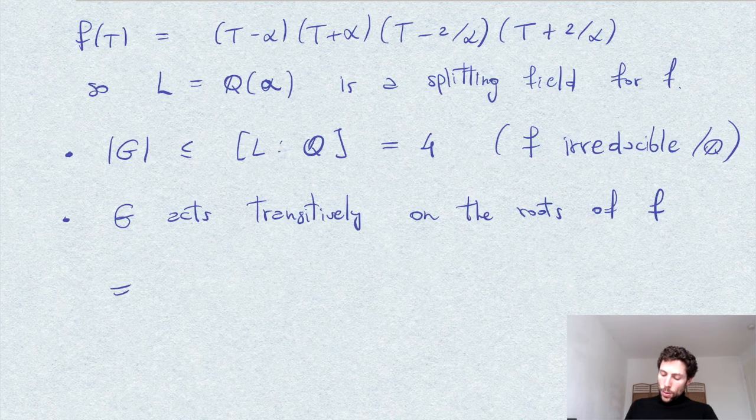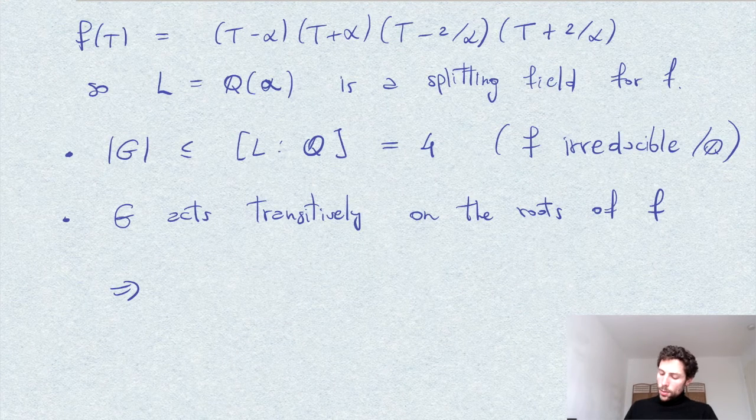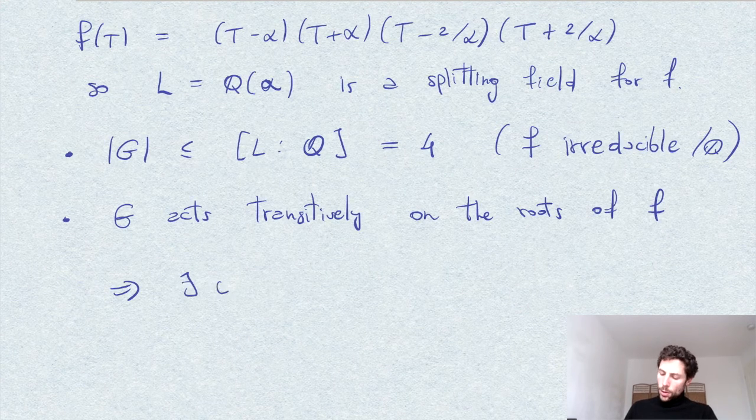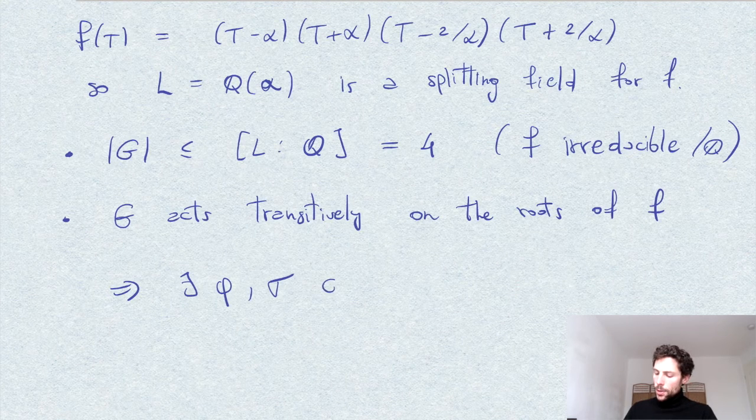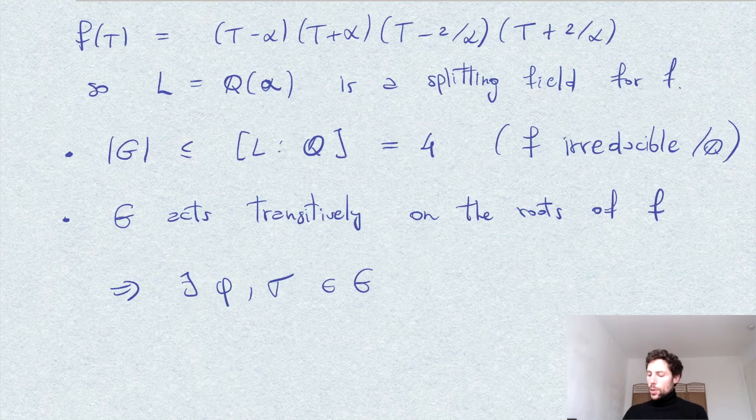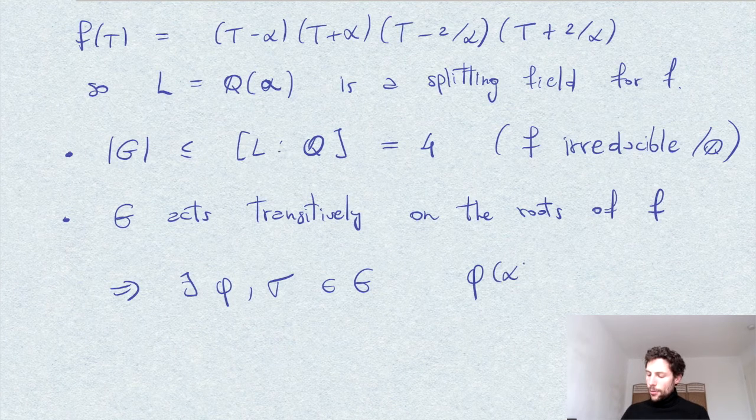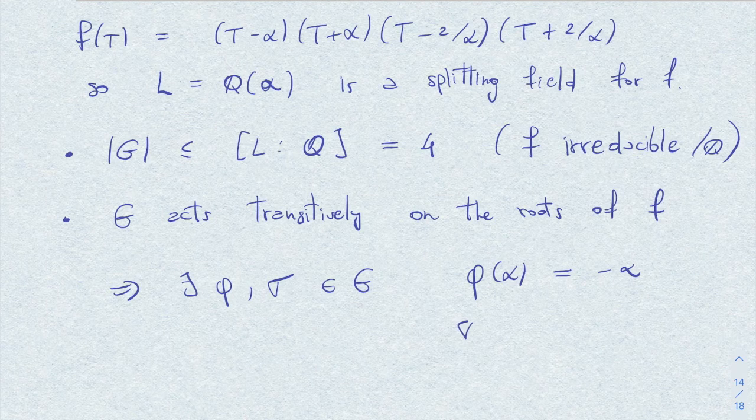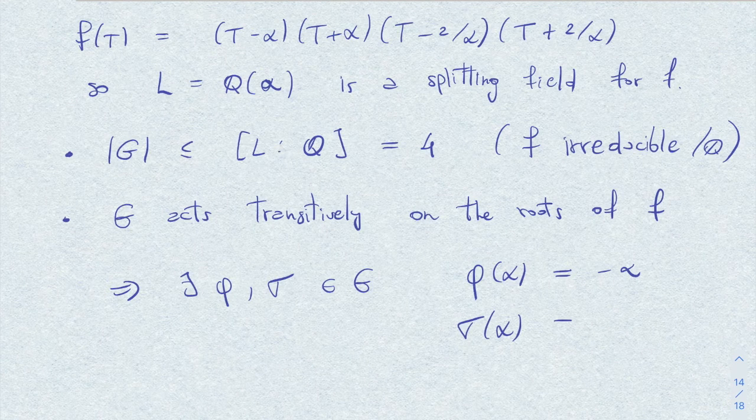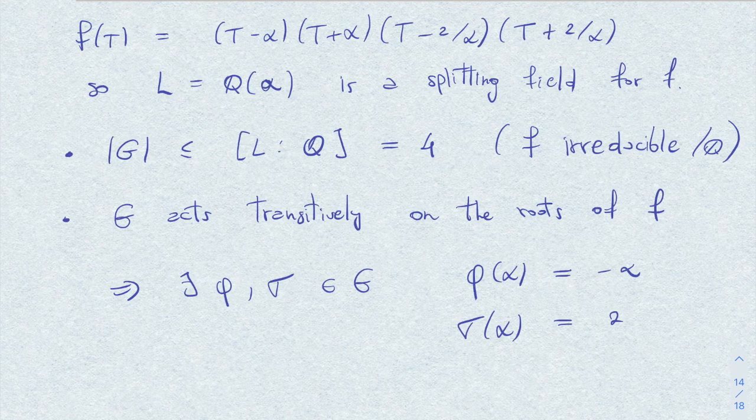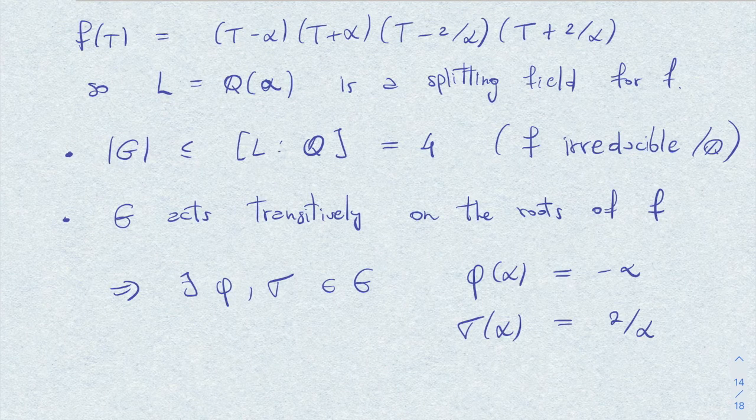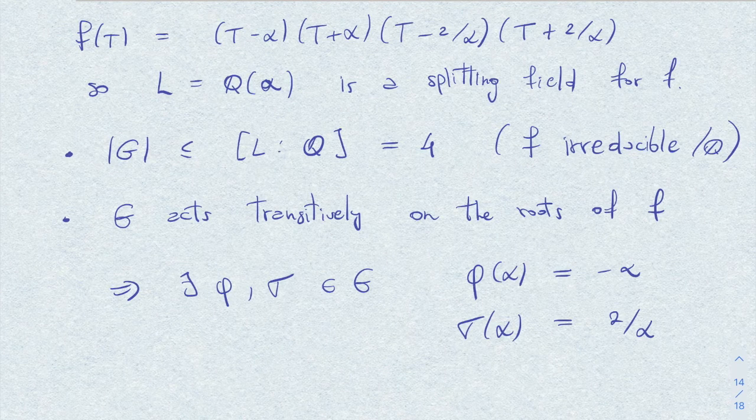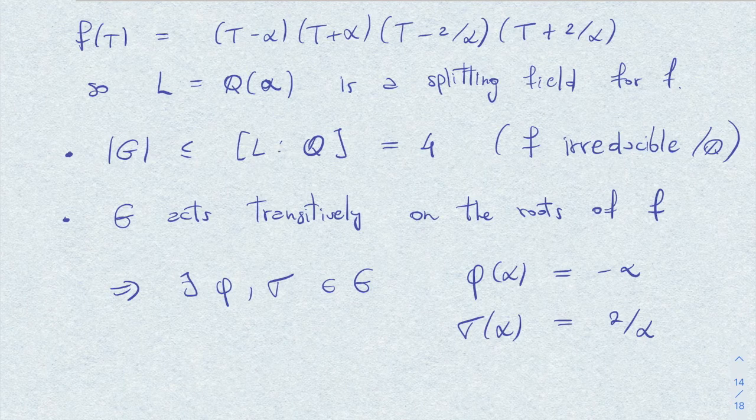So we can choose two elements, let's call them phi and sigma in G. And we choose them so that alpha by phi is minus alpha and sigma sends alpha to 2 over alpha. We choose two elements which act in this way.